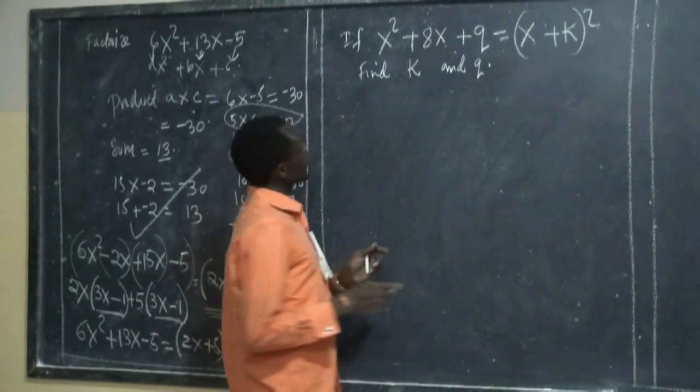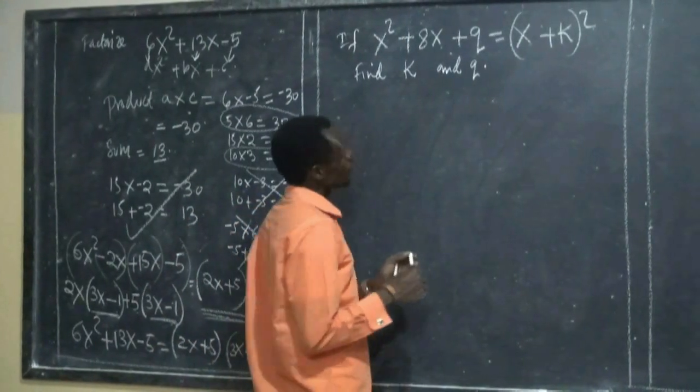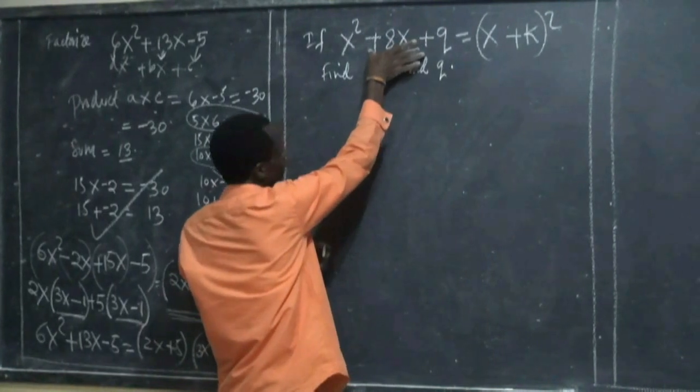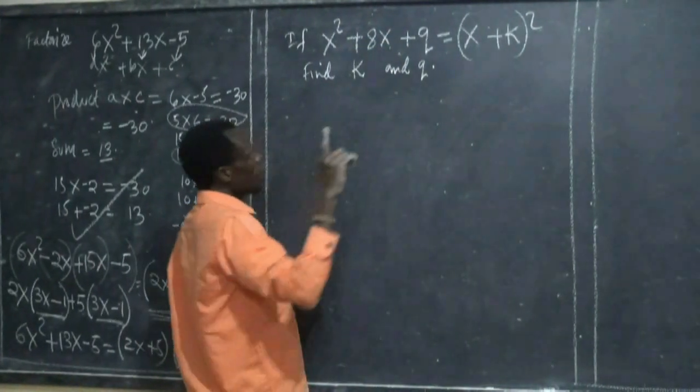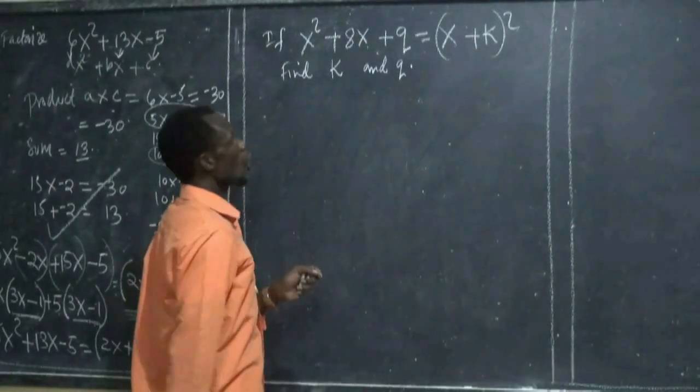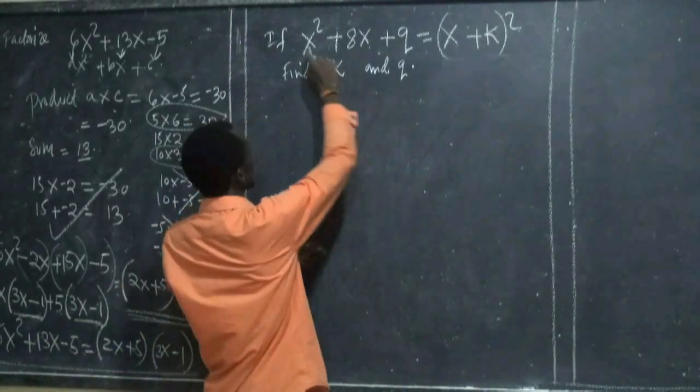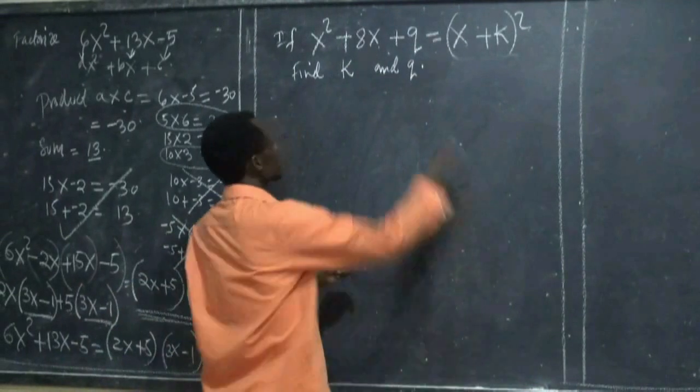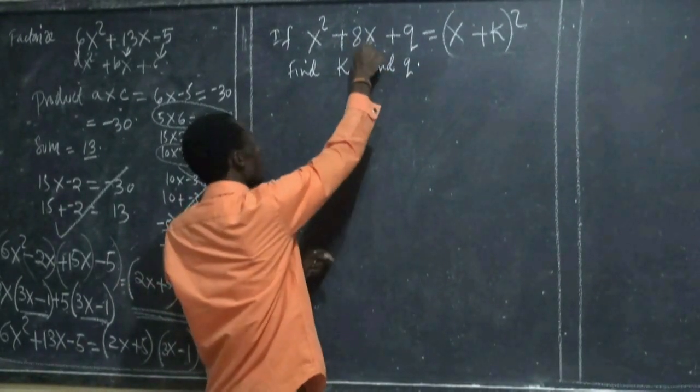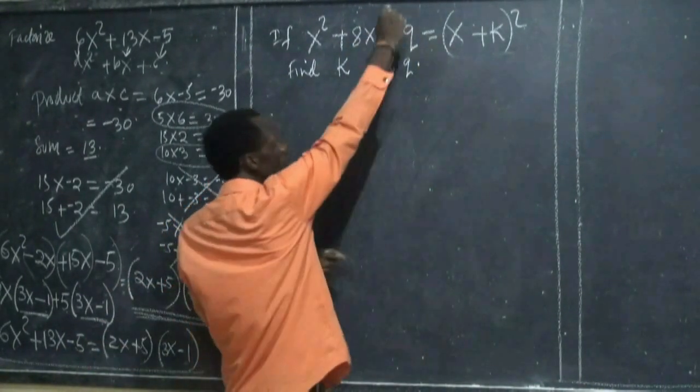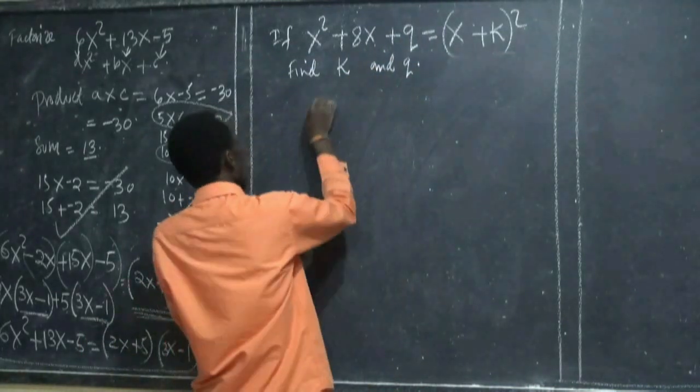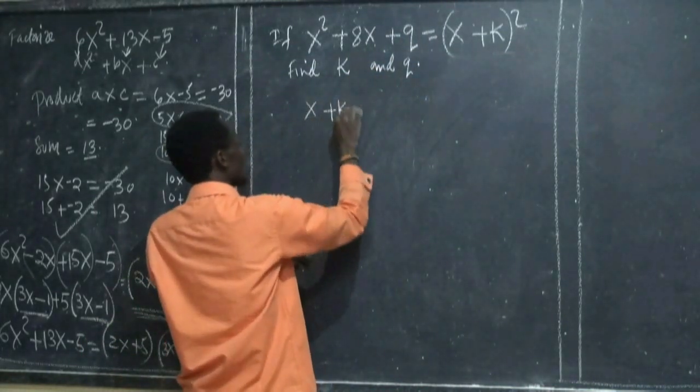Now you have to make sure that this equation is also equal to this one. So you have to expand the other side. So as you can find x squared and something with x and something with no x. Then from x plus k squared, that is x plus k squared.